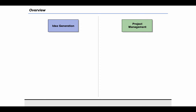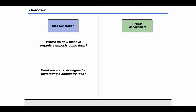The two main themes I want to talk about today are idea generation and project management. Within idea generation, I want to address the question of where new ideas in organic synthesis come from, then talk about some strategies for generating a chemistry idea. After that, I want to give a short overview of how a methodology project should be advanced, including how to organize data and manage a project more generally.